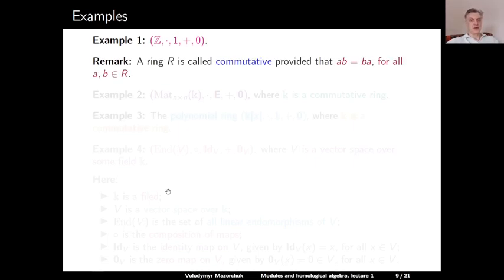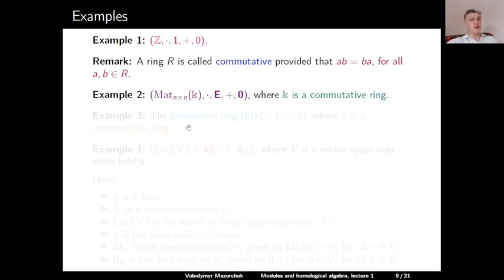Remark: a ring R is called commutative provided that the multiplication is commutative. Addition in the ring is always commutative by the axioms, but the multiplication doesn't have to be commutative. In other words, a ring is commutative provided that AB = BA for all A, B in R. For example, we have the ring of all n×n matrices with respect to matrix multiplication and addition, with the identity matrix and the zero matrix. If n > 1, the ring of matrices is not commutative, even if the underlying ring of coefficients is commutative.